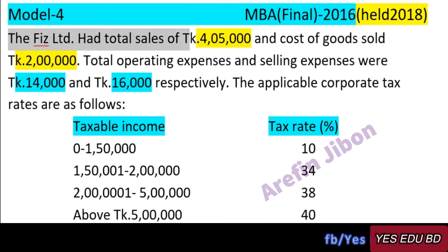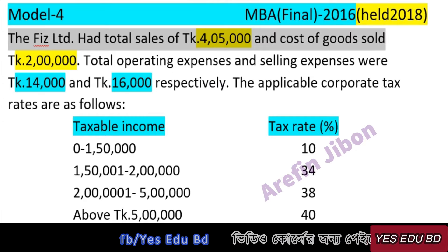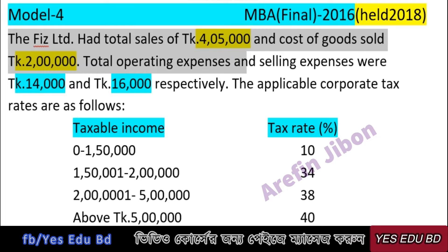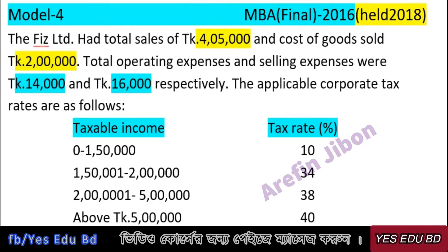FIIs Limited total sales of 4,05,000 and cost of goods sold 2,00,000. Total operating expenses were 14,000 and selling expenses were 16,000.